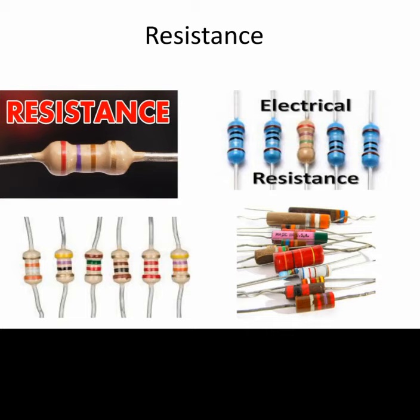Resistance is the opposition that an electrical device has to the flow of electrical current. All devices have some resistance. A resistor is a device that has a particular resistance. It is denoted by capital R. It is measured in Ohms. It is connected by Ohm's law: I equals V divided by R, where I is the current, V is the voltage, and R is the resistance.